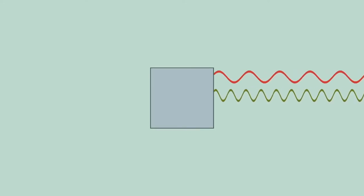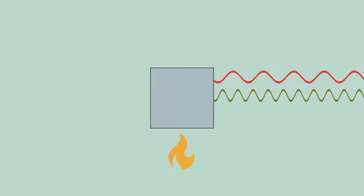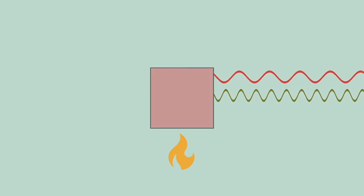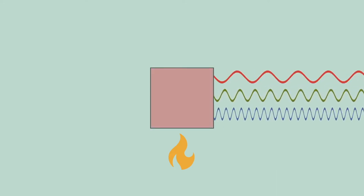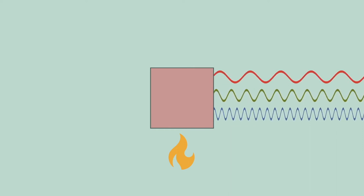All physical objects, regardless of their temperature, emit electromagnetic radiation with a specific range of wavelengths. Based on experiments, an object emits electromagnetic radiation with shorter wavelength when its temperature increases.